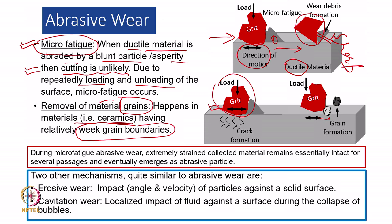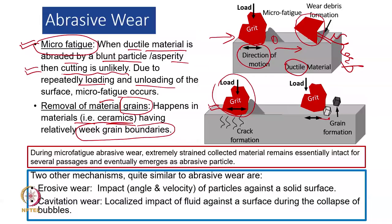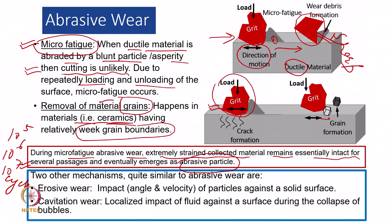These are the four major subdivisions of abrasive wear. To summarize: during micro fatigue abrasive wear, the extremely strained ductile material remains essentially intact for several passages — it can be 10^5, 10^6, or even 10^7 cycles depending on conditions. But finally it will turn out to be wear debris, which can be kind of an abrasive particle itself.